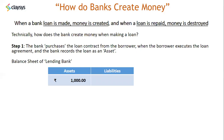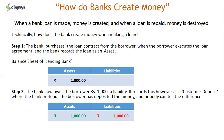The balance sheet of the bank gets impacted when that loan is made — it now has an asset, the loan amount, which in this example is a loan of 1,000 rupees. The second step is the bank now owes the borrower 1,000 rupees, which is a liability. It records this as a customer deposit, where the bank pretends the borrower has deposited the money and nobody can tell the difference. No money is transferred from elsewhere — it is money created on the basis of accounting entries within a bank.